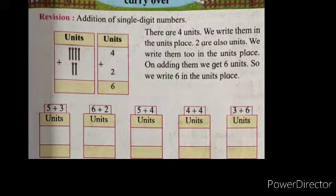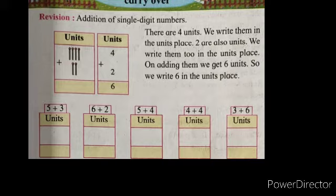Addition of single digit numbers. Children, 4 plus 2. The 4 is in the unit place and 2 is also in the unit place, so write 4 plus 2 in the unit place. 4 number means 4 matchsticks, 2 number means 2 matchsticks. We have to add 4 plus 2. Count total — 4 fingers plus 2 fingers, or 4 matchsticks plus 2 matchsticks. Total becomes 6. So write number 6.